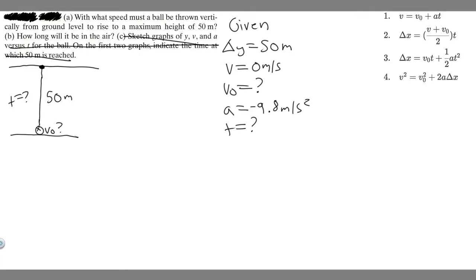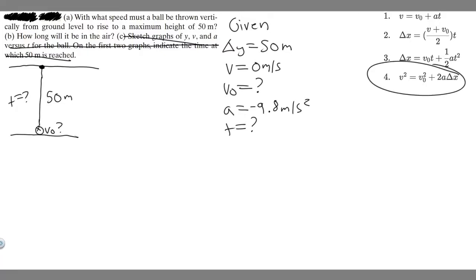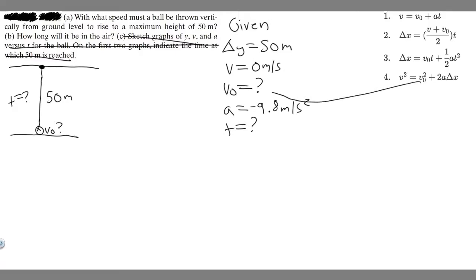Let's start with A — with what speed must the ball be thrown? Looking at our kinematic equations, notice what we're given: delta y, v, and a, and we're trying to find v sub 0. We're not given t, and equations 1 through 3 all contain t, so we can't use those. The only equation we can use is the one without t. Notice that all the variables line up: we have v, we're solving for v sub 0, we have a, and we have delta y.